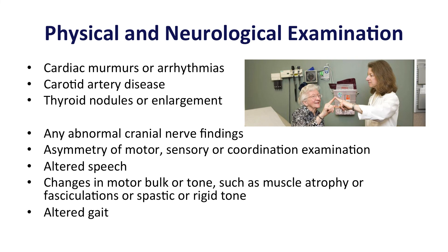The physical and neurologic examination is another key component of routine assessment. A general examination should emphasize the cardiovascular system but also assess for thyroid and other general medical problems. A complete neurologic examination should be undertaken, with particular attention to asymmetries that may be referable to structural lesions of the central nervous system, as well as clues such as altered gait and altered speech.